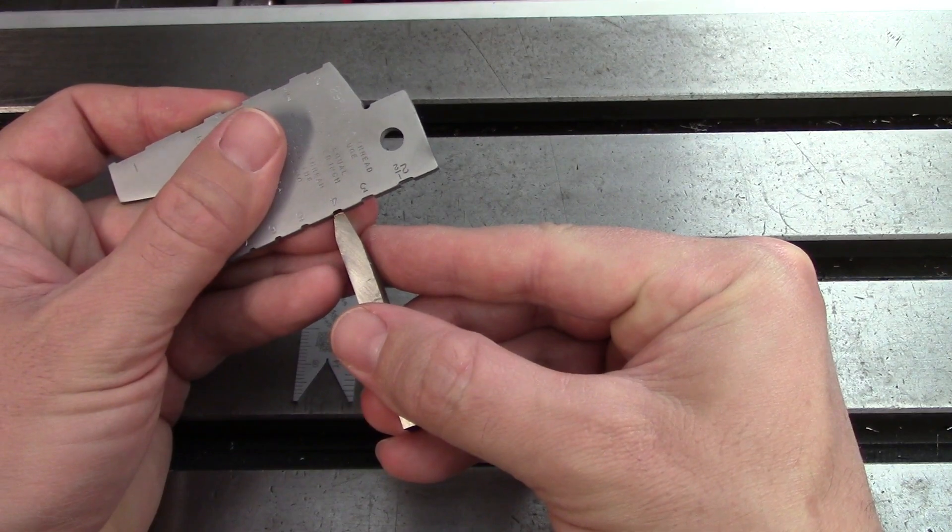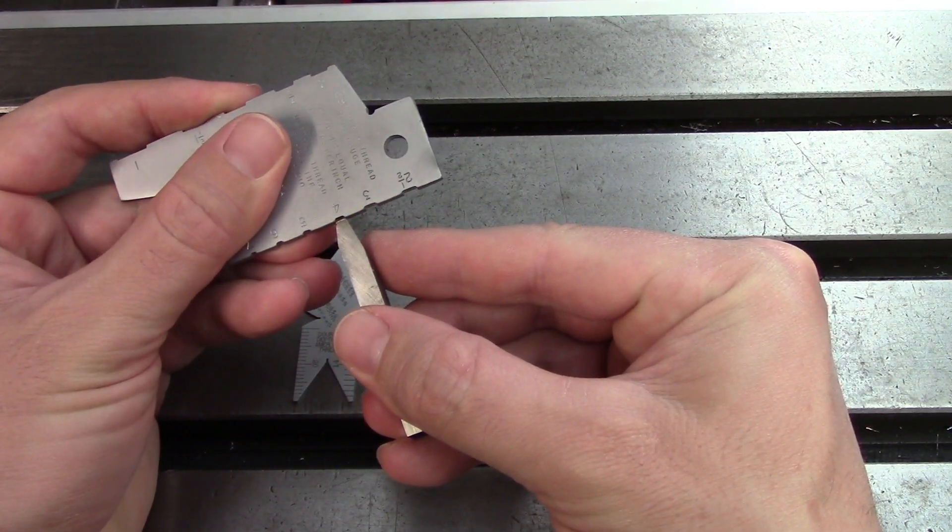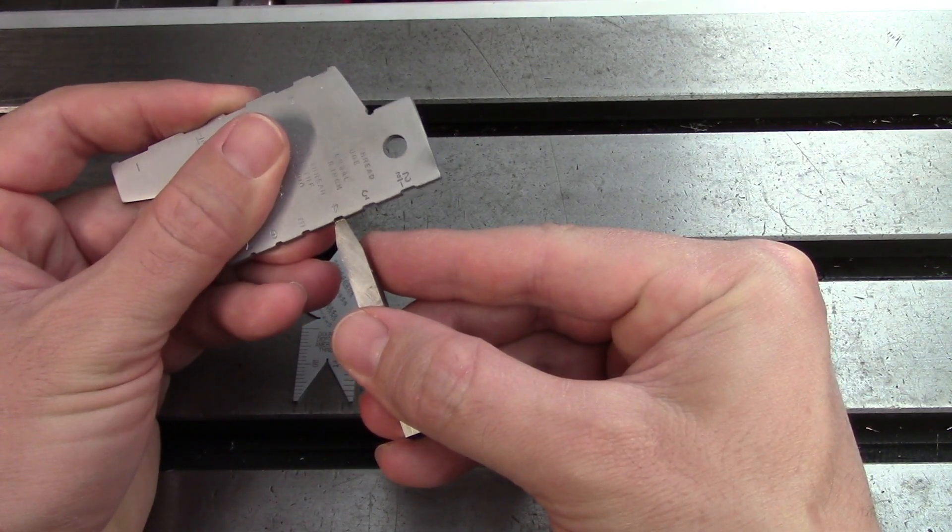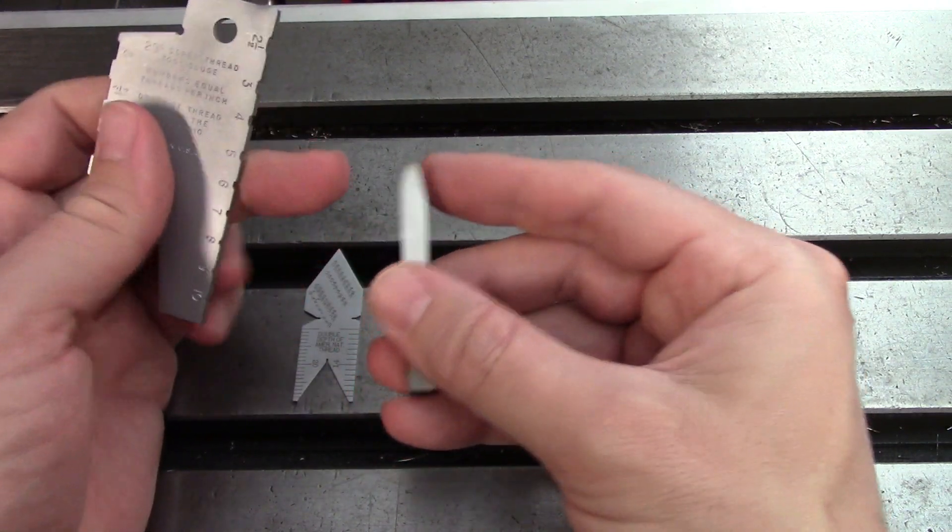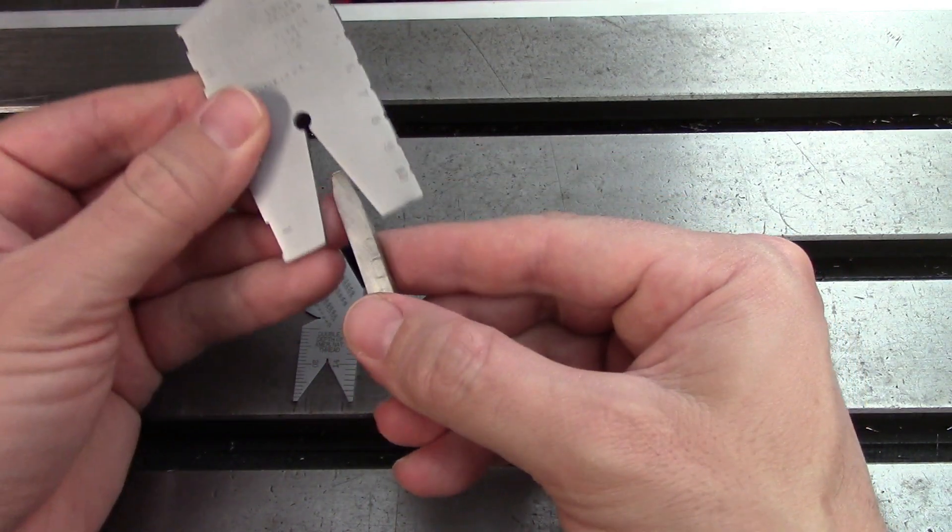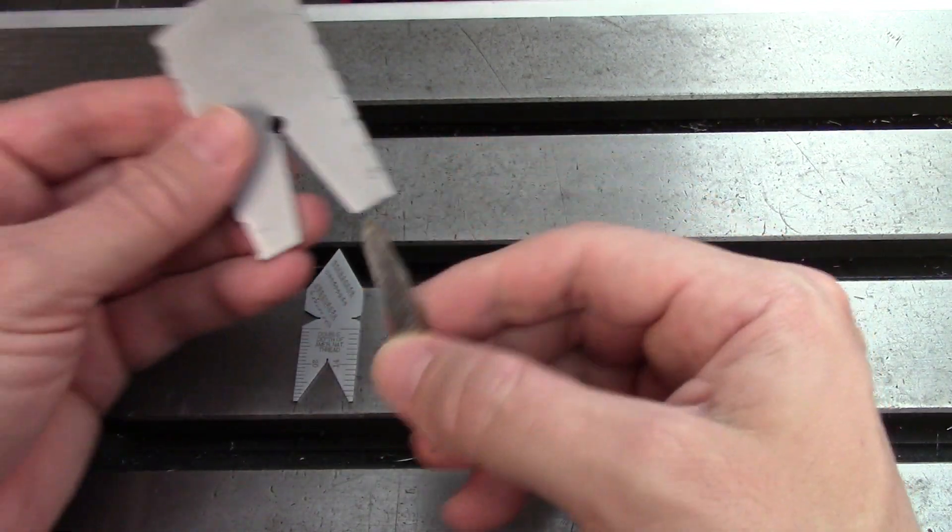If I were going for four threads per inch the tool does not fit in there so I would have the wrong thread profile. The only way to do that is to grind on the flanks. And there you're using the thread gauge much like you would this fishtail.